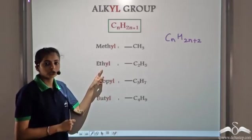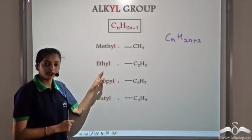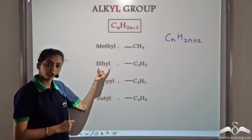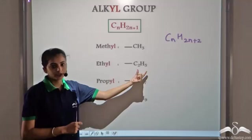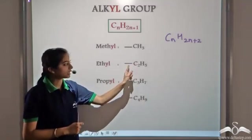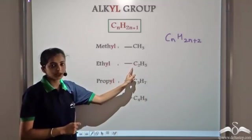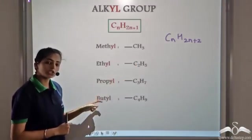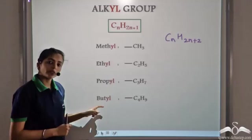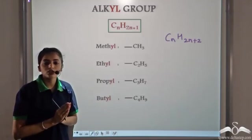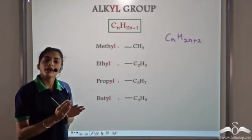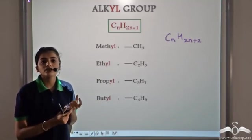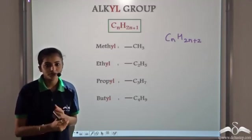If we remove one hydrogen atom from ethane, we get the ethyl group, that is C2H5. Again the fourth place is vacant for the first carbon atom and so on. So whenever one hydrogen atom is removed from any of the alkanes, we get the corresponding alkyl group.